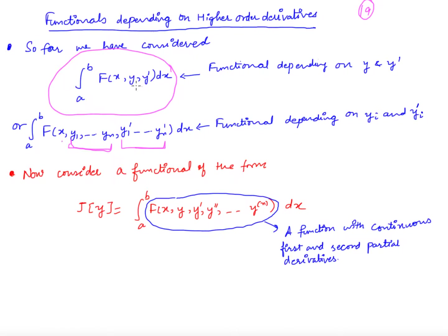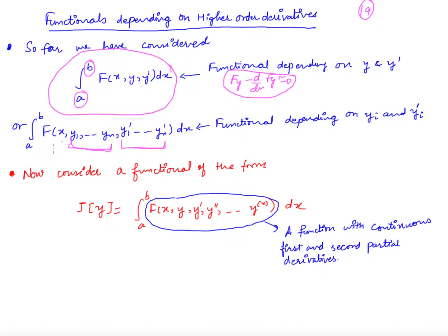In this case, we know that Euler's equation is f_y minus d/dx of f_{y'} = 0. This is a second order differential equation, and there will be two arbitrary constants in its solution. Those can be obtained using the boundary conditions that y(a) and y(b) are specified.